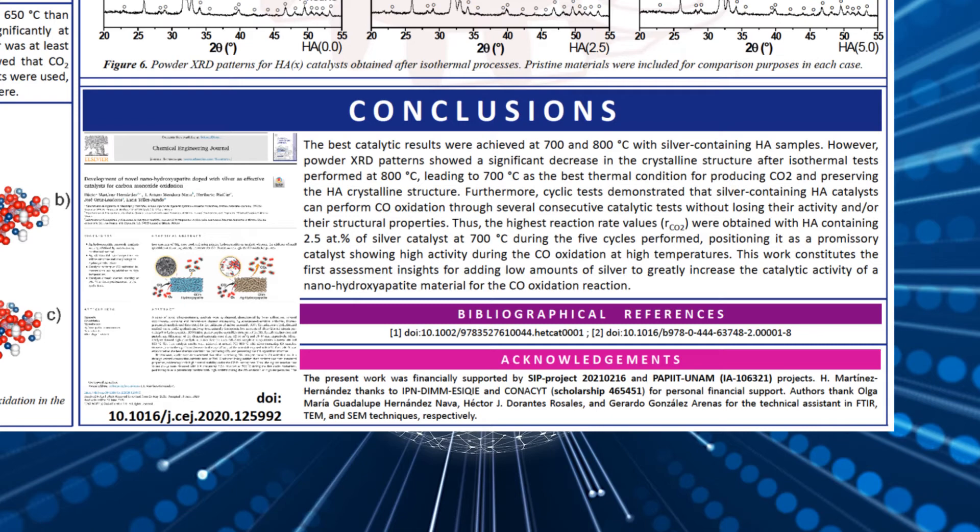Powder XRD patterns show a significant decrease in the crystalline structure after an isothermal test performed at 800 Celsius, leading to 700 Celsius as the best thermal condition for producing carbon dioxide and preserving the hydroxyapatite crystalline structure.